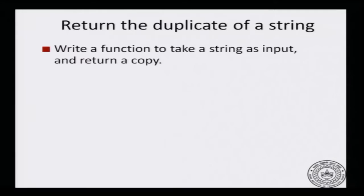In this lecture, let us look at an application of malloc and free to solve a problem. The problem is to write a function to return the duplicate of a string. A string is given as the argument and you have to return the duplicate of that string. We have to write a function to take a string as input and return a copy.